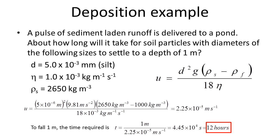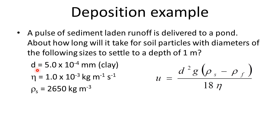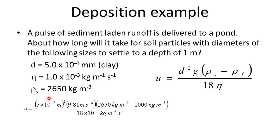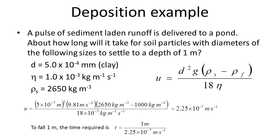For the third example — clay-sized particles — the diameter is 5×10⁻⁴ millimeters, which converts to 5×10⁻⁷ meters. Everything else is the same as before. Plugging that into the calculator, you should find a settling velocity of 2.25×10⁻⁷ meters per second. Again, the diameter dropped by one order of magnitude and the settling velocity decreased by two orders of magnitude. The time to fall one meter is 4.45×10⁶ seconds, or 51 days.